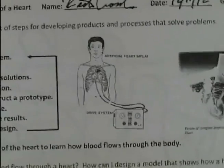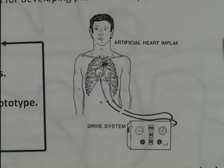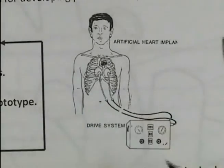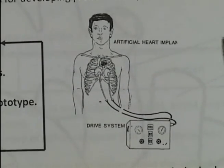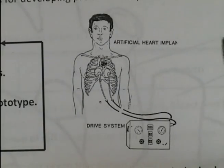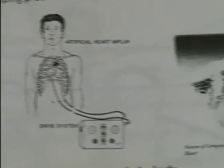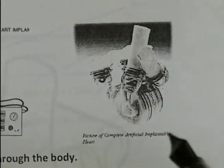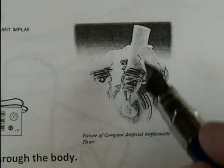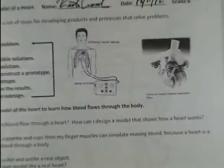Here is a human heart that was made where a person actually got the blood to come in and out using an external drive system. This is a picture of an artificial heart that was actually implanted inside a human to pump blood both in and out. People have tried this for many years — the heart is a beautiful organ that is really hard to duplicate.